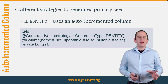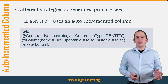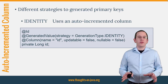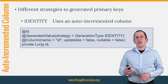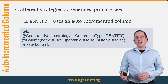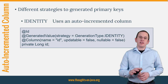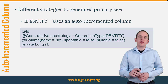Hibernate and JPA support different strategies to generate unique primary key values. One of them is the Identity strategy. It relies on an auto-incremented primary key database column and delegates the value generation to the database.